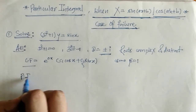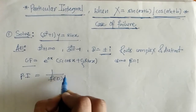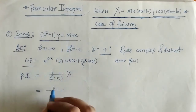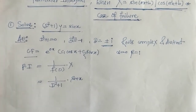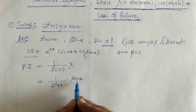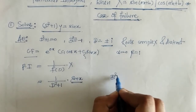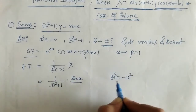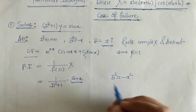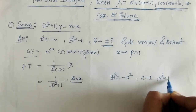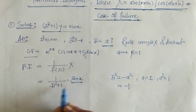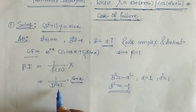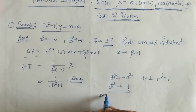Now we have to find PI. PI is given by this formula. We have to put the value of f(D). f(D) is D squared plus 1 and x is sine x. Now we know that when x is of this type we have to put D squared equals minus a squared. Here a is the coefficient of x, so a equals 1, meaning minus a squared equals minus 1. When we put D squared equals minus 1 this denominator gets 0, which means that case fails.